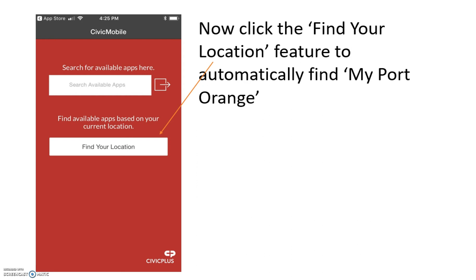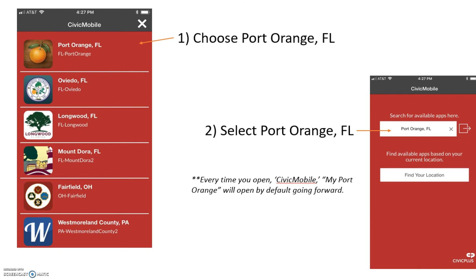Now click the Find Your Location feature to automatically find My Port Orange. From the list of cities provided, you want to select Port Orange.